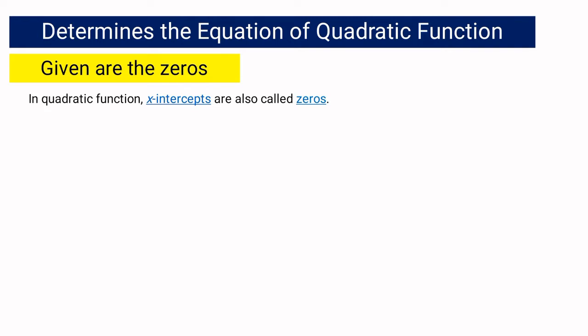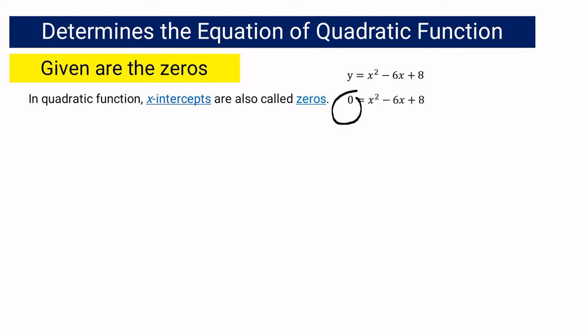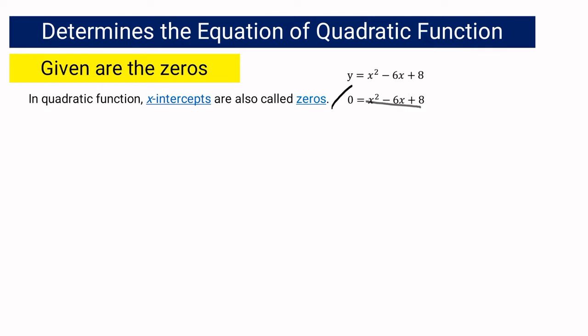Remember, when we discussed the x-intercept, x-intercepts are the values of x that will make the function be equal to zero. So if we have y equals x squared minus 6x plus 8 and we are going to look for the x-intercept, y must be equal to zero. These are also called zeros of quadratic function because these are the values of x that will make the function equal to zero.